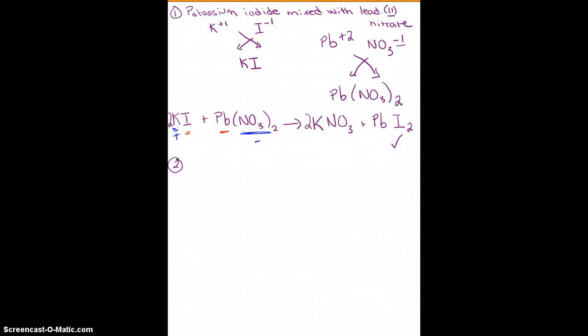The second example that I want to take a look at is what happens when I have aluminum being added to hydrochloric acid. So let's start out again with writing out what those chemical formulas are going to look like. Aluminum, charge of plus 3 off my periodic table. Hydrochloric acid is going to be the combination of hydrogen, which has a charge of plus 1, and chlorine, which has a charge of minus 1. So that gives me the formula HCl.